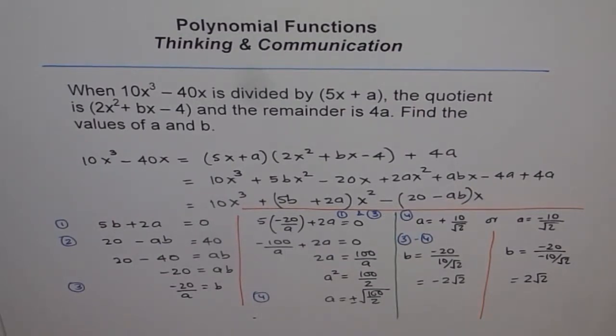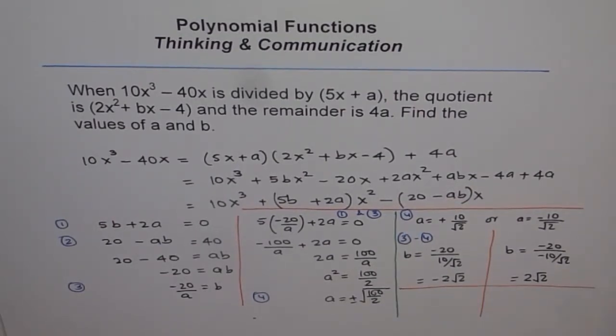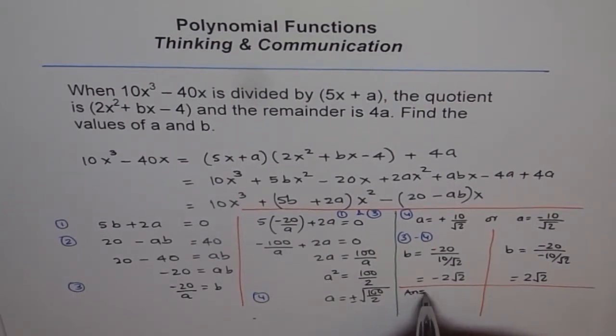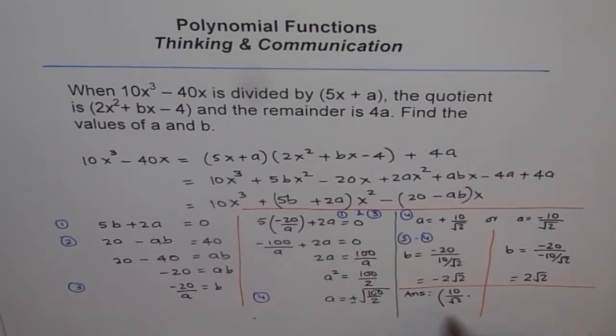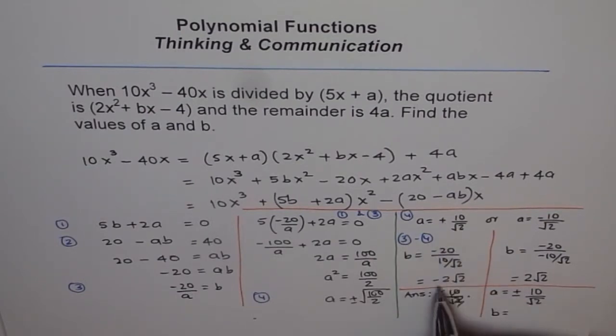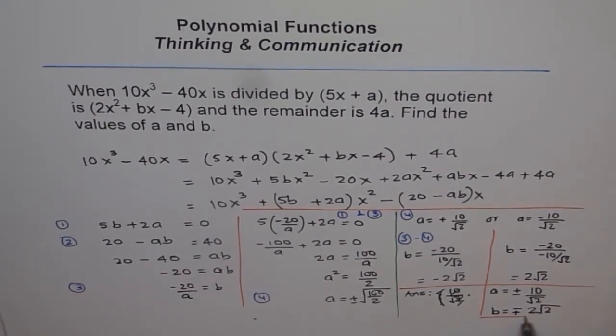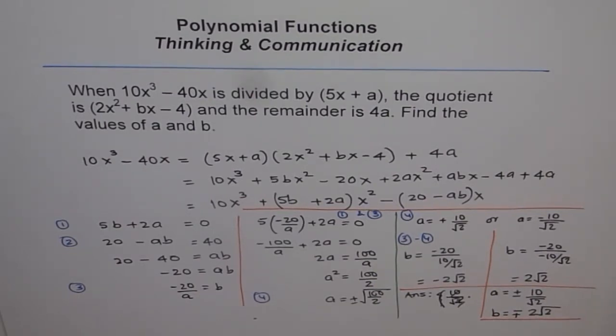And therefore, I can write down my solution now. So my solution is, so the answer here is, I should write a equals to. So the answer is, if a equals to plus minus 10 over √2, then b equals to minus plus 2√2. I hope you get it. So that is what our answer is for this interesting problem.